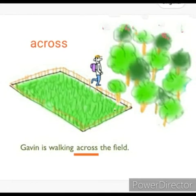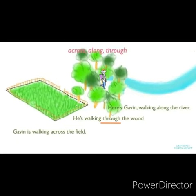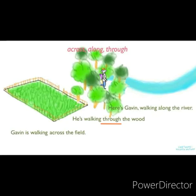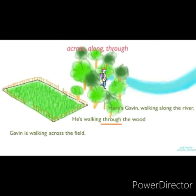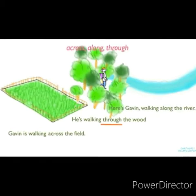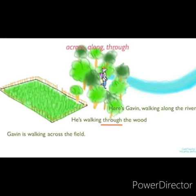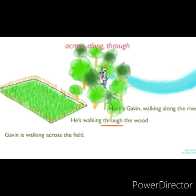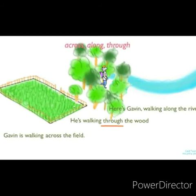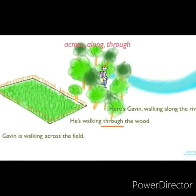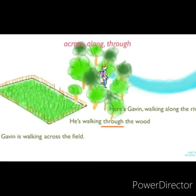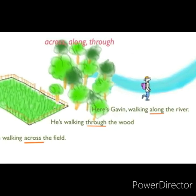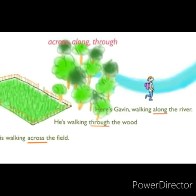Now he has crossed the field and he is entering into a forest. A forest is a closed area. So when you walk inside a closed area, you say through — you use the word through. So he is walking through the wood. Wood means forest. When you move into a closed area like a tunnel or a fully covered area like a forest, you use the word through. He is moving inside the long, tall trees, so through the road. And now he has come out.